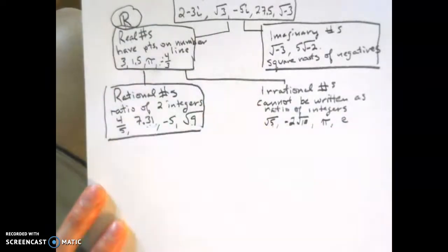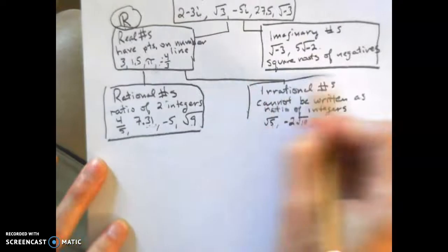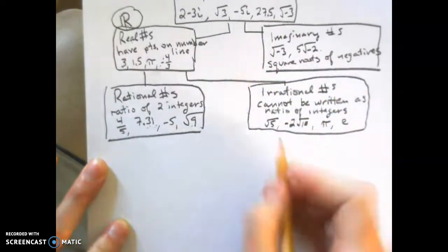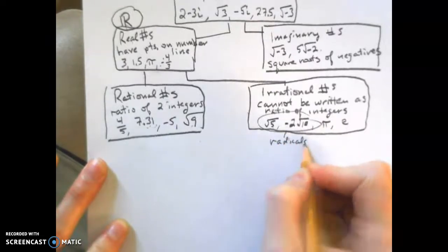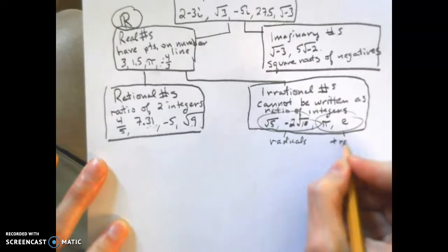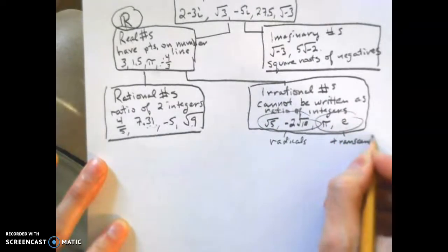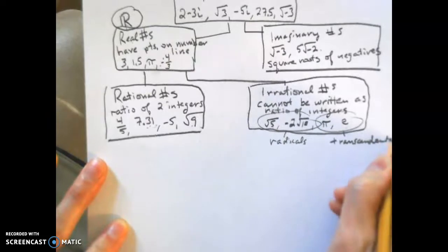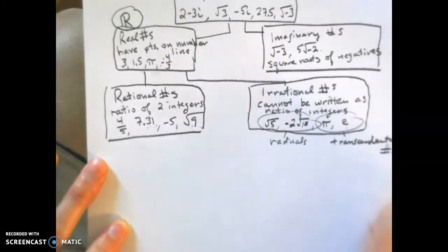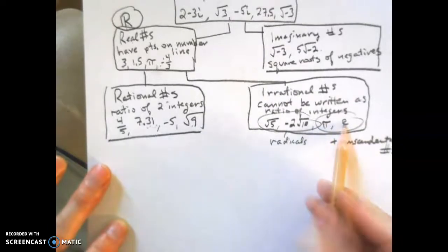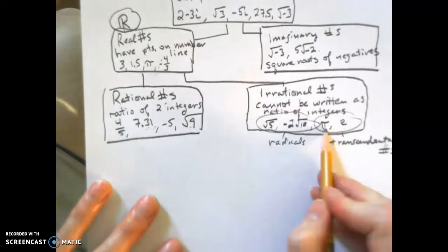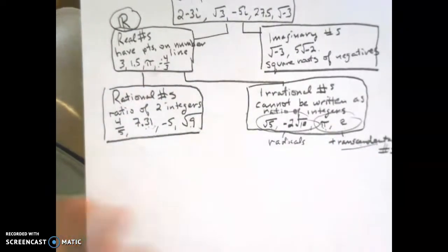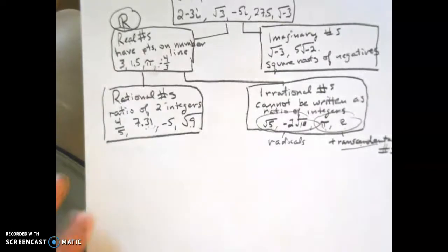E is another number kind of like pi — it never ends and never repeats. The square root of 5 and negative 2 rad 10 are radicals, while pi and e are called transcendental numbers. They're these magical, beautiful numbers found in nature. It's not like someone just said 'let's make pi about 3.14' — it was discovered. In a way, they transcend all other numbers.